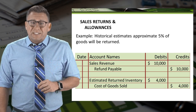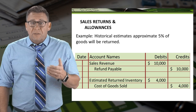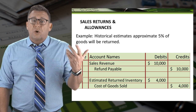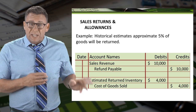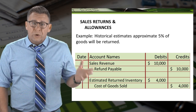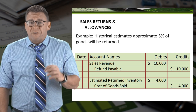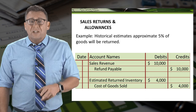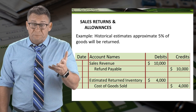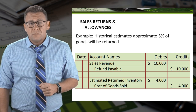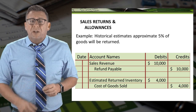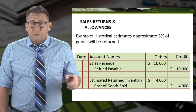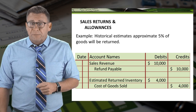However, most companies experience returns. In this example, let's assume that approximately 5% of sales are returned. We debit sales revenue and credit refund payable for 5% of revenue, which in this case is $10,000. We also need to record the estimated return of inventory at 5% of cost. So we debit estimated return to inventory and credit cost of goods sold for $4,000, the estimated return of goods.